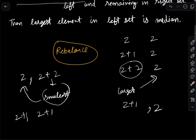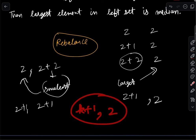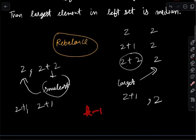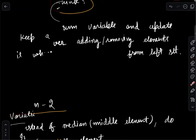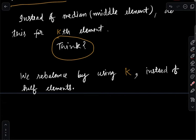Currently we rebalance when the element counts in both sets are not equal. For the kth element variation, instead we rebalance whenever the left set has k+1 elements — move one from left to right; or whenever it has k-1 elements — move one from right to left. So the rebalance condition simply becomes: the number of elements in the left set is not equal to k.